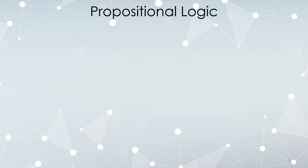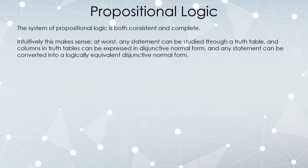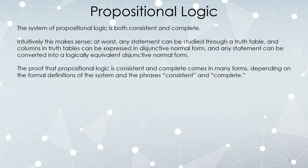Let's consider propositional logic. Propositional logic is consistent and it is complete. Intuitively this is sensible: any statement can be studied through a truth table, even if it's enormous, and columns in a truth table can always be expressed in disjunctive normal form and converted into logical equivalences. To prove that propositional logic is consistent and complete there are many different proofs, depending on how formally you define consistent and complete. Church and Post are a pair of people who were really key in formalizing this.